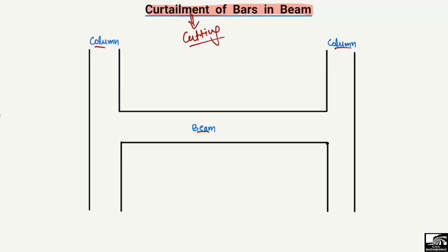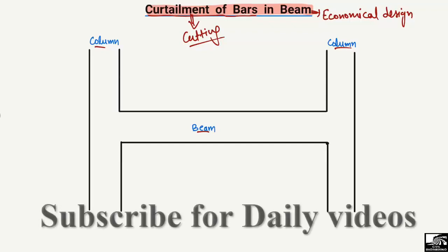Why do we do curtailment of the bars in the beam? Because we want to do the economical design of the beam — we want to save money. In a multi-story building with 100 or 80 floors, there are thousands of beams in the structure, so we can save millions by curtailing bars in each beam.